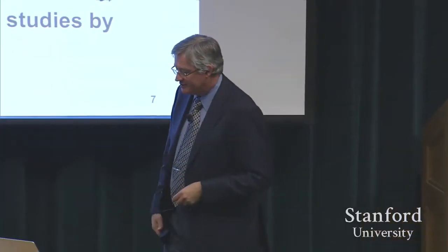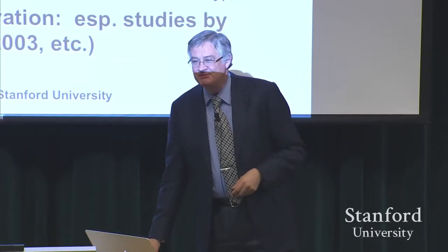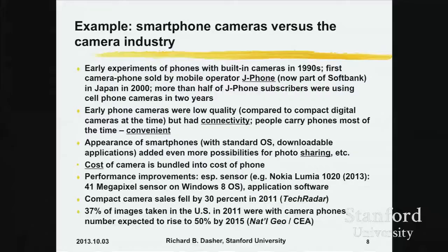A good example of disruptive innovation going on right now: smartphone cameras. Although there were all kinds of experiments by Ericsson and others in the 1990s, the first time a mobile carrier offered a phone with a camera was J-Phone in the year 2000. J-Phone was a Japanese mobile carrier — they were later bought by Vodafone, then by SoftBank. So they started all of this.